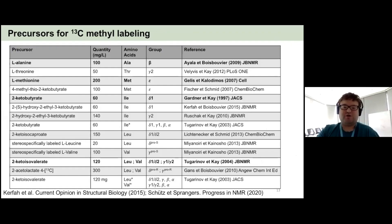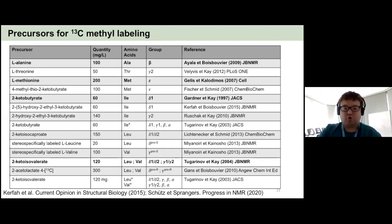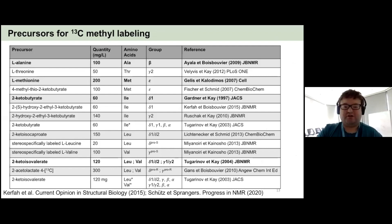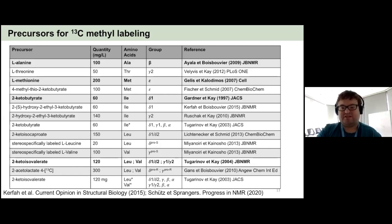The typical precursors used for methyl labeling are summarized here. The most popular scheme is MAILV, where for alanine and methionine you literally just add the labeled amino acids without needing a precursor. If anyone's interested in doing these kinds of preps, feel free to contact me for a protocol, or read either of the reviews shown here.